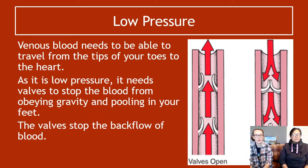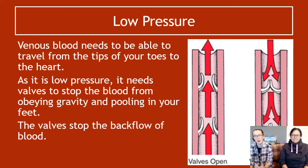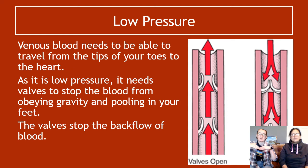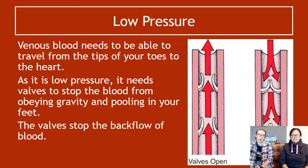Venous blood is low pressure because it is a long way past your heart — it has been pumped around half your body and lost some pressure. Venous blood needs to travel from the tips of your toes all the way back to your heart against gravity. So veins have valves that prevent the back flow of blood. Once the blood has moved up a little, the valves shut behind it like a trapdoor, stopping it going back down. That's how blood gets from the tips of your toes all the way back up to your heart.